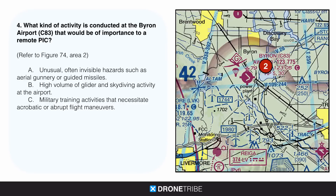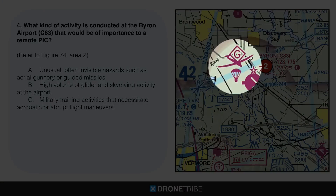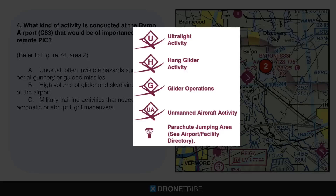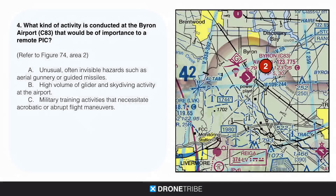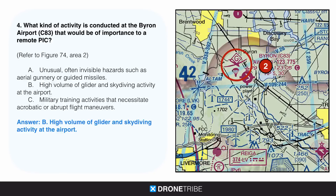Question four: what kind of activity is conducted at Byron Airport that would be of importance to a remote pilot-in-command? This is figure 74, area 2 of the testing supplement. Looking at Byron, we see two symbols here. Referring to the legend in the testing supplement — page one — this indicates glider operations and parachute skydiving operations. This is straightforward and strictly based on reading the legend.